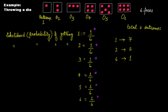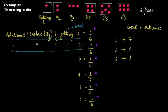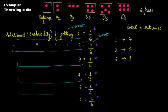In the case of a die, you have six basic events. The probability of getting one is one event, the probability of getting two is another event, and the same for three, four, five, and six. But there can be more events — I'll show you how.